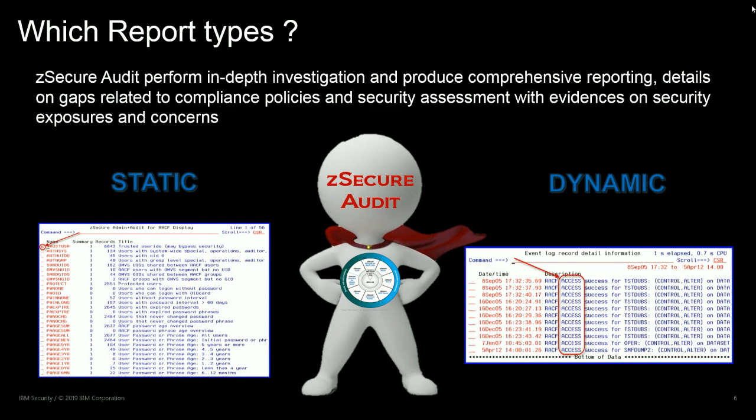From the input data sources you can extract data using several kinds of standard security reports provided out of the box by the product, but you can also modify them to create custom reports. Essentially there are two types of reports: static reports, based on static data that changes infrequently — for example system parameters or security parameters — and dynamic reports, based on data that changes continuously because they include system security events that are registered continuously by the system.